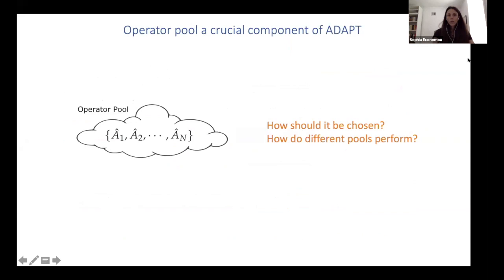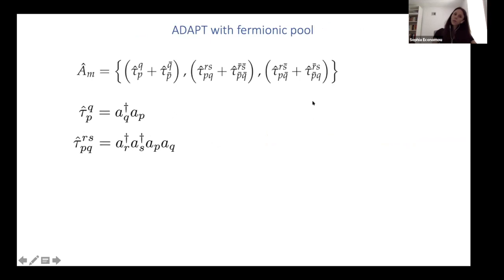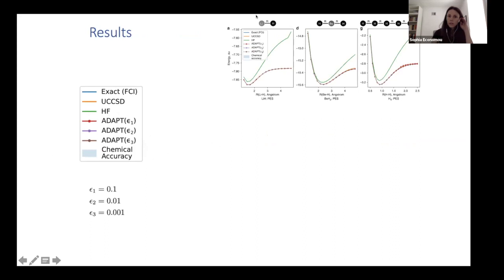So a crucial component of ADAPT is the operator pool and you could ask questions such as how should this be chosen and how do different pools perform. So I want to answer these questions now. So the simplest thing we can do is go back and look at the UCCSD and just choose similar operators as they have there. So singles and doubles and use that as our operator pool. So this is what we did in the first numerical tests. So here we are testing how the algorithm performs for lithium hydride, beryllium hydride, and a chain of hydrogen atoms.